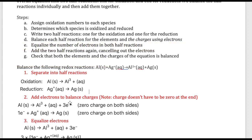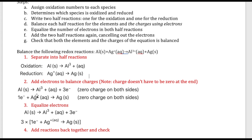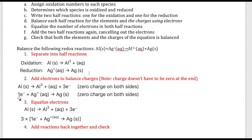One point to clarify: it doesn't always have to be zeros on both sides — sometimes it's plus two on both sides, or negative one on both sides. In this specific example it happens to be zero on both sides. Once you have the electrons, you need to equalize them because you must have conservation of charges, just like conservation of mass.